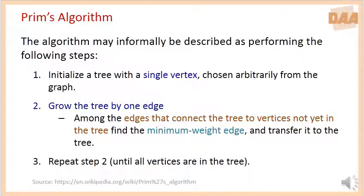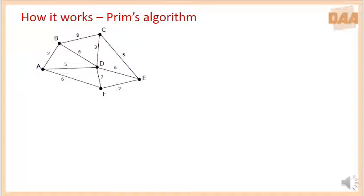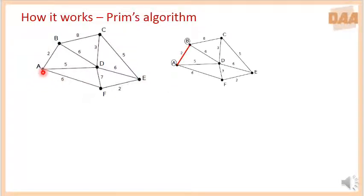Let us take an example to know the working of Prim's algorithm. Consider a graph with six nodes with different weights for the edges. Let us consider A as a starting vertex. The vertex A has three adjacent edges: AB, AD, and AF. The weights are 2, 5, and 6. Among 2, 5, and 6, select the minimum that corresponds to AB. So select the edge AB.